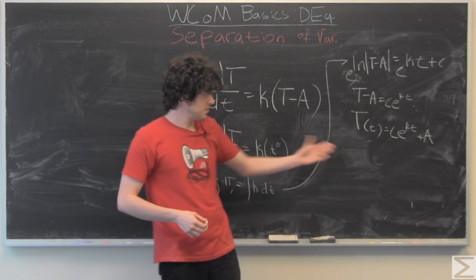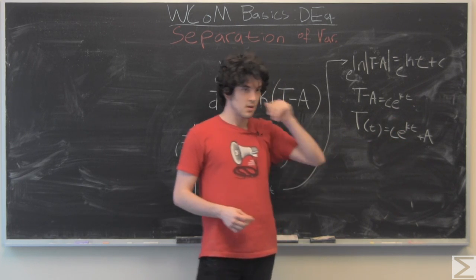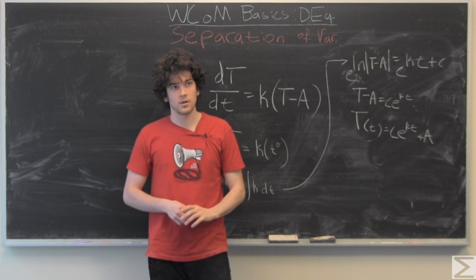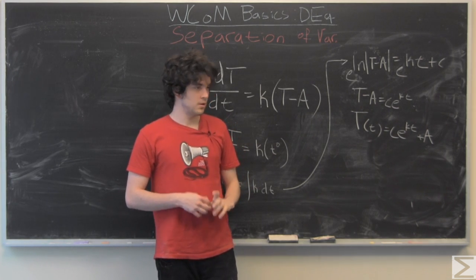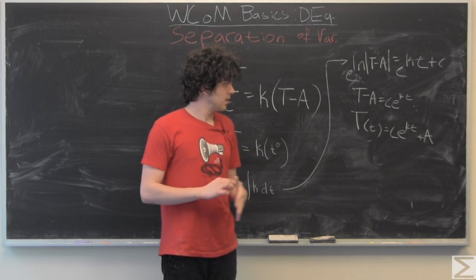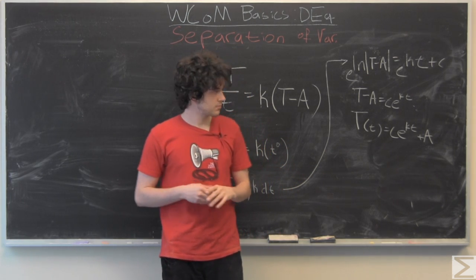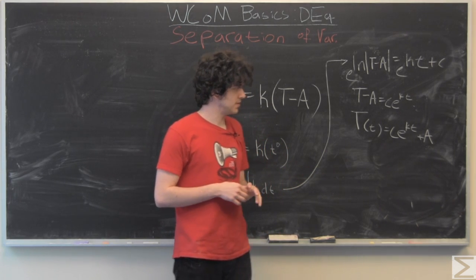So when time is zero we have E to the zero which is just one so we have C plus A. So depending on if your object that you're looking at is initially hotter or colder, C is either going to be less than or greater than A, or the absolute value of C that is.